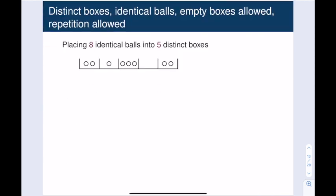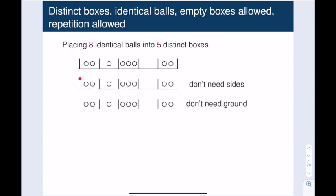Let's start by looking at a particular example. I want to place eight identical balls into five distinct boxes. Repetition is allowed, and this picture shows one possible configuration. What I'm going to do is to start erasing some of the lines of this picture, but I need to preserve the information about where the balls are placed. The first thing I'll do is erase the left and right sides. I don't need them to know where the balls are.